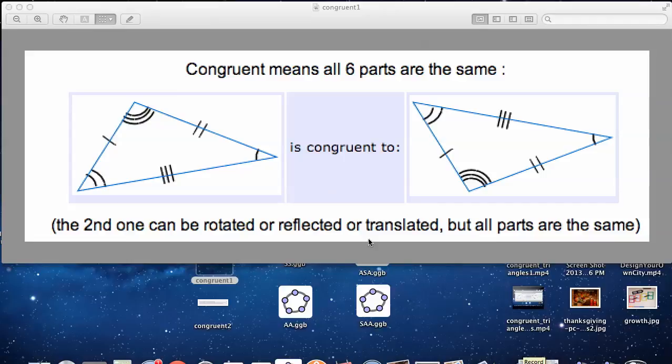We're talking about this idea of congruent parts, congruent shapes, and congruent triangles. A triangle has six parts, so we want to know what's the minimum number of parts we have to measure so that all six parts will be the same.